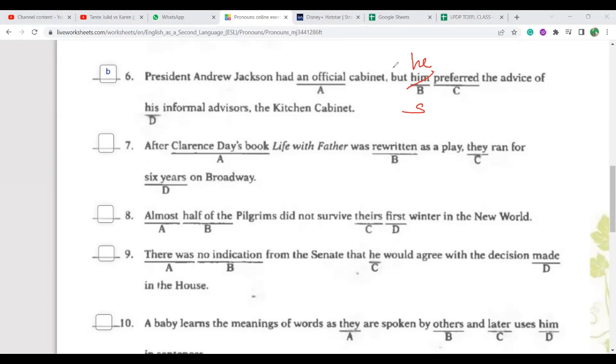Number seven: After Clarence Day's Life with Father was rewritten as a play, they ran for six years on Broadway. C, it should be it. They ran, this should be it. Why? Who is referred to? The book. So after the book Clarence Day's Life with Father was written as a drama, it ran for six years on Broadway. Broadway is the theater in London. Clear?